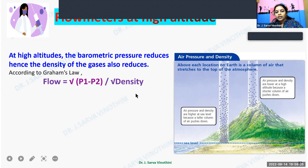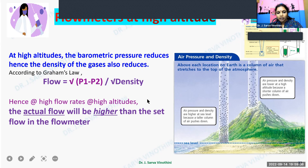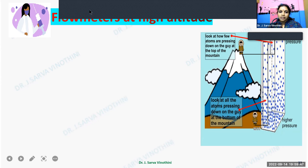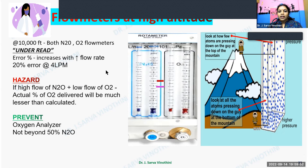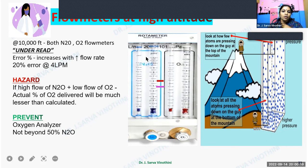At high altitudes, barometric pressure is lower, so gas density is lower. According to Graham's law, lower density increases turbulent flow, so the actual flow delivered is higher than what is set on the flowmeter — the flowmeter under-reads. If using a 50/50 mixture of nitrous oxide and oxygen this is not hazardous, but if using 70% nitrous oxide and 30% oxygen, the nitrous concentration will be even higher, risking delivery of a hypoxic mixture. Therefore at high altitudes it is preferable not to exceed 50% nitrous oxide, and strongly advisable to use an oxygen analyser.